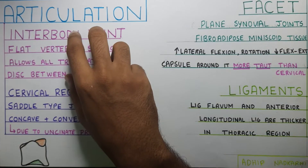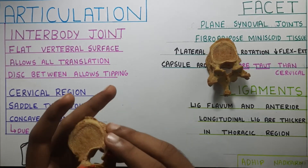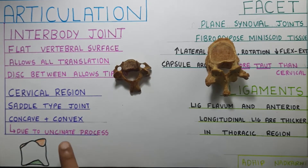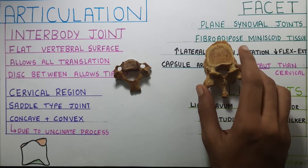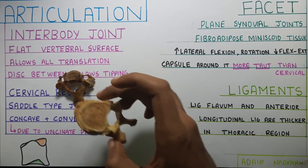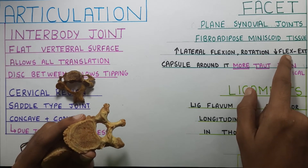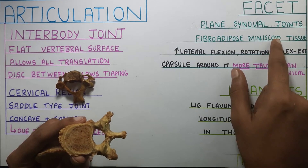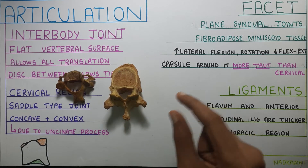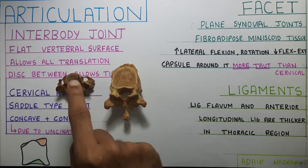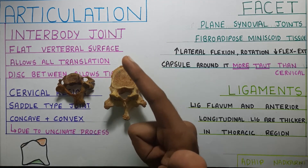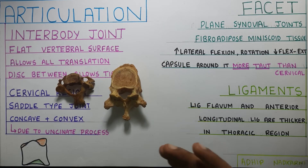Let's summarize quickly. The interbody joint is flat in the thoracic spine, whereas in the cervical spine it is saddle-shaped — concave plus convex — formed by the uncinate process. Because the thoracic surface is flat, translation occurs in all directions. At the facets, which are oriented in the frontal plane, flexion-extension is reduced whereas lateral flexion is the highest. The facets have fibro-adipose meniscoid tissues and are plain synovial joints. Importantly, the capsule is comparatively taut compared to the cervical region, giving it lesser range of motion. Finally, the ligamentum flavum and anterior longitudinal ligaments are thicker, further restricting range of motion.